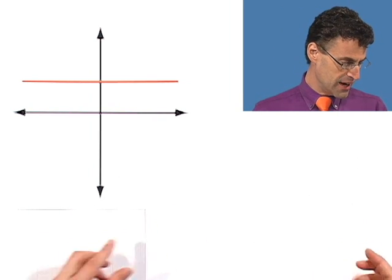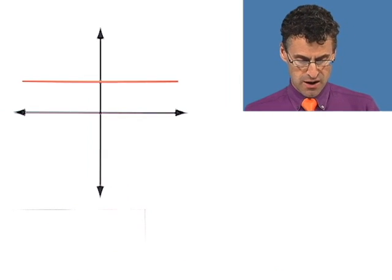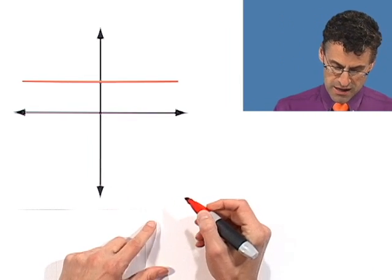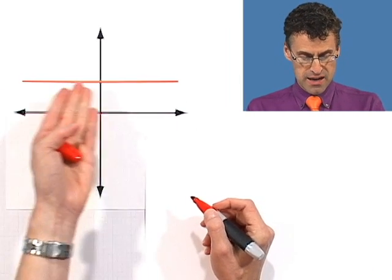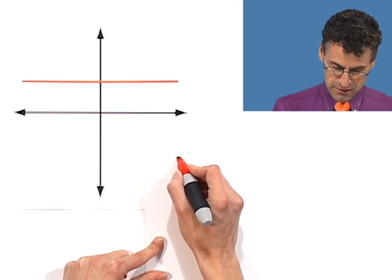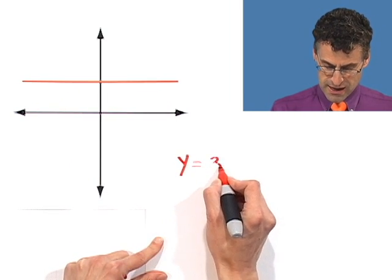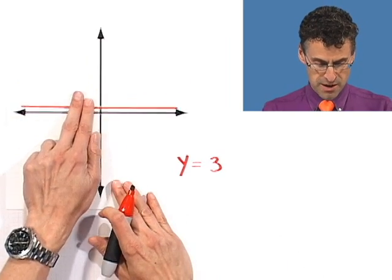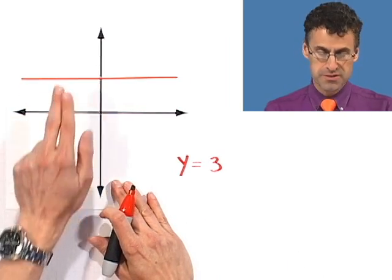And in fact, you can actually identify the equation of a horizontal line just literally by its y-intercept and to say what the value is. So, y equals three. That means you're three units up. One, two, three. Boom, there's the graph.